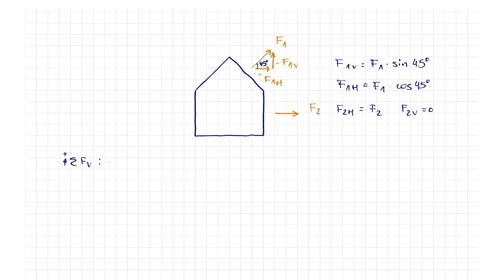If we define the positive direction upwards, the RV, resultant vertical, value is 0.71 kN.